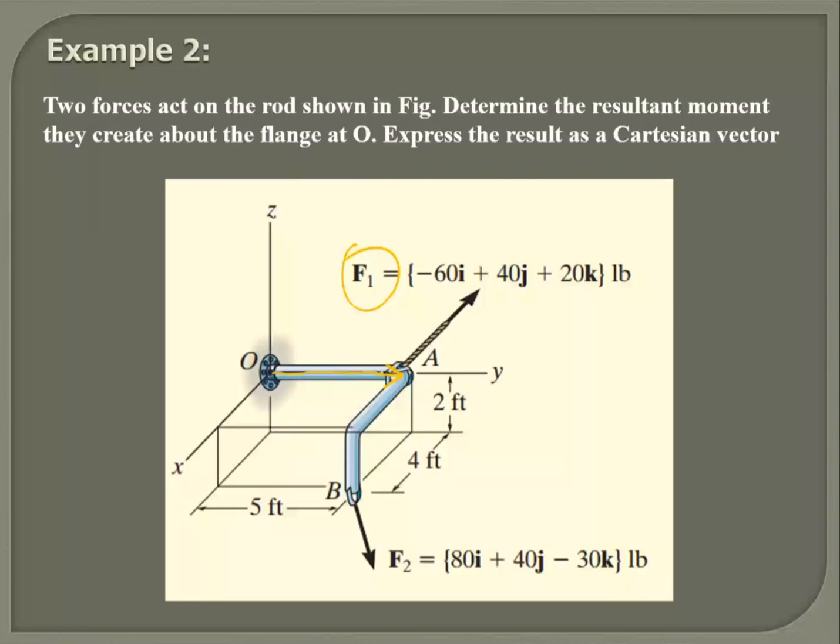And to find the moment for this one, it's very easy to find the position vector here. Once you find the moment like M1 equals R cross F1, and M2 equals R cross F2.